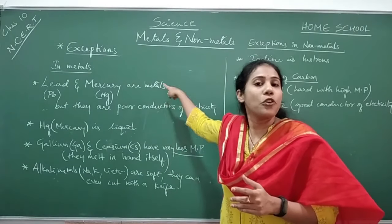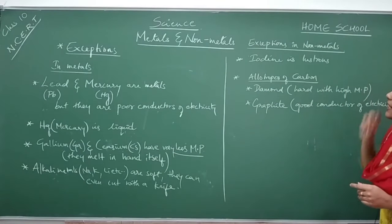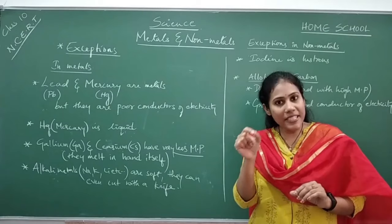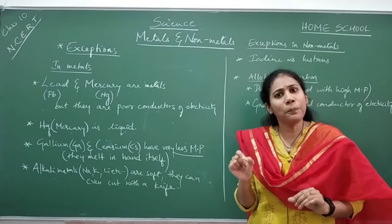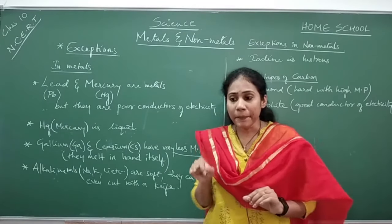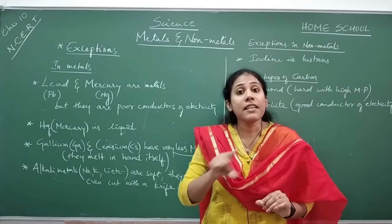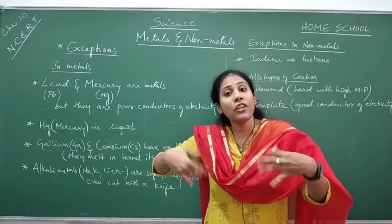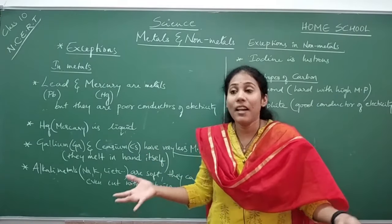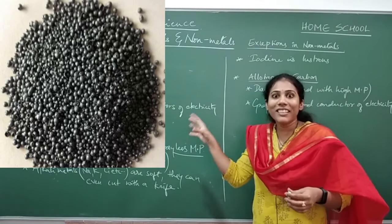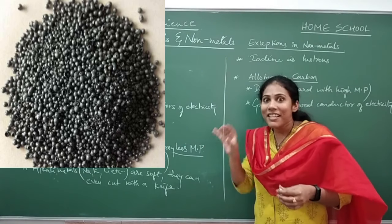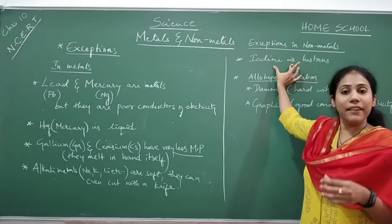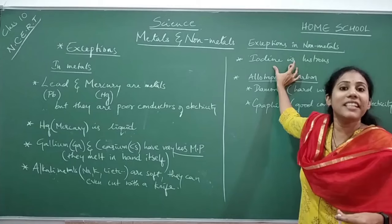Now coming to the exceptions in case of non-metals. The first exception is iodine, placed in group 17. Iodine is a non-metal, and non-metals are generally not lustrous. But iodine is lustrous — you can see the shiny brown iodine crystals in the picture. So iodine is the only non-metal element that shows the lustrous property.